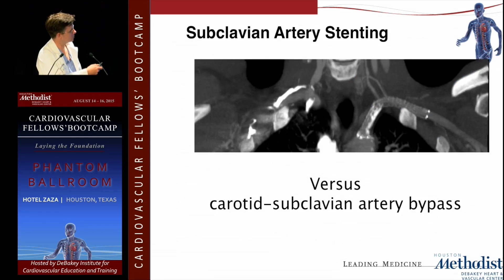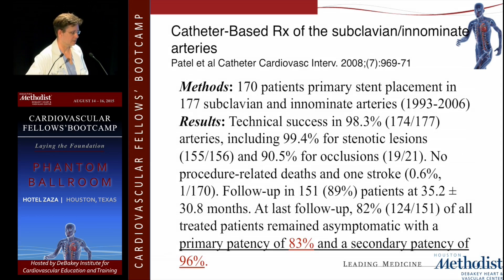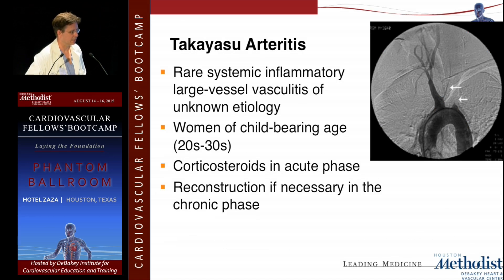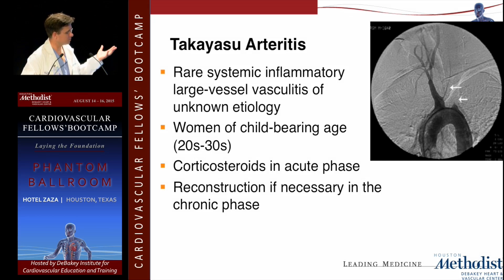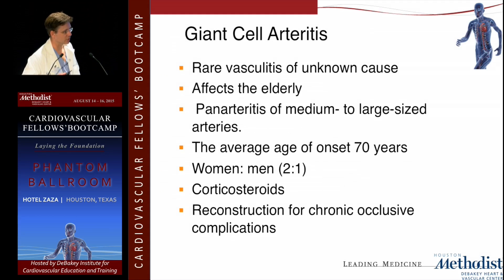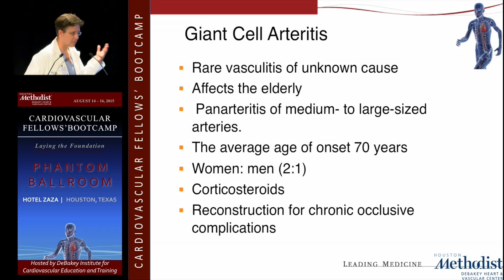Proximal arterial stenting in the subclavian works quite nicely, though crossing across the vertebral origin is a concern. Stenting has been shown to be fairly durable, but it is not as durable as carotid-axillary or carotid-subclavian bypass grafting. For the arteritides — Takayasu's is fairly uncommon in practice. For Takayasu's, you do not want to operate in the acute phase; get them through the acute phase with corticosteroids and immunosuppressants, then consider reconstruction in the delayed phase. This is more common in younger women of Asian descent. Giant cell arteritis affects older patients, women more than men — similarly, not to be treated surgically in the acute phase, and generally not with stents but with surgical reconstruction in the chronic occlusive phase.